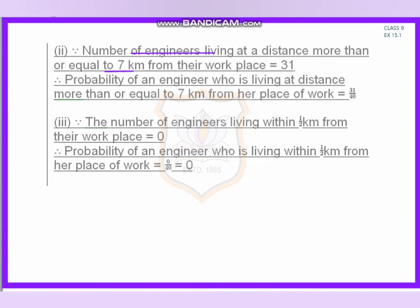The number of engineers living at a distance more than or equal to 7 kilometers from their workplace is 31. Therefore, the probability of an engineer living at a distance more than or equal to 7 kilometers is 31 by 40.